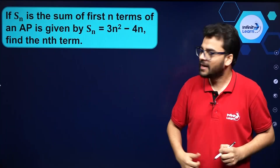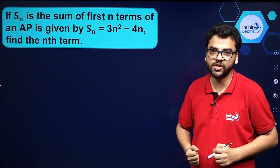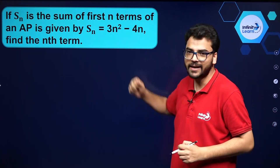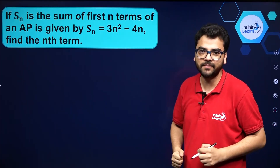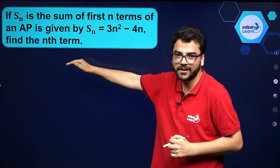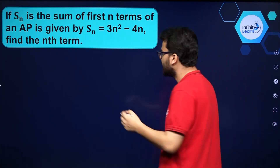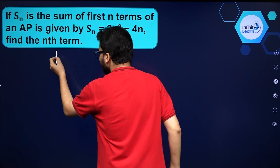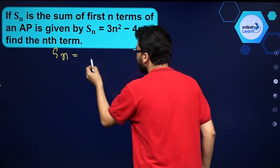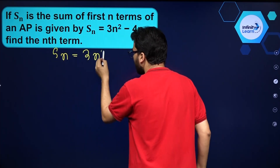We have a question on arithmetic progression where the sum of the first n terms of that AP is given in terms of n, and you have to find the nth term. So Sn is given to be equal to 3n squared minus 4n.